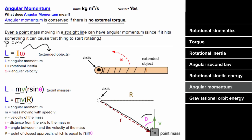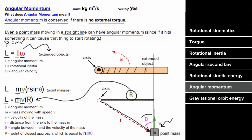To find the angular momentum of a point mass moving in a straight line, draw the trajectory and ask how close it gets or ever will get to the axis — that's the distance R. Take R times mass times velocity to get angular momentum. Angular momentum is a vector; its direction is counterclockwise or clockwise depending on which way the object rotates. Units are kilogram-meters squared per second.